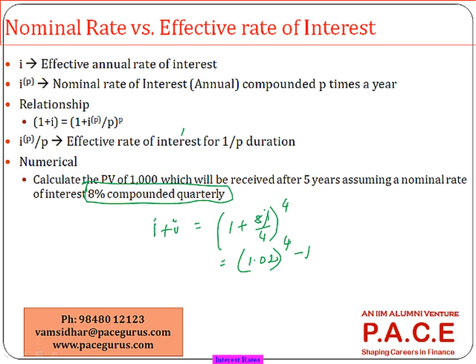If nominal is given: either treat it as a single period (if period is one, nominal and effective are the same), or convert it to effective first and then use the effective rate to find the discounting factor. These two things must be kept in mind for solving any numerical.